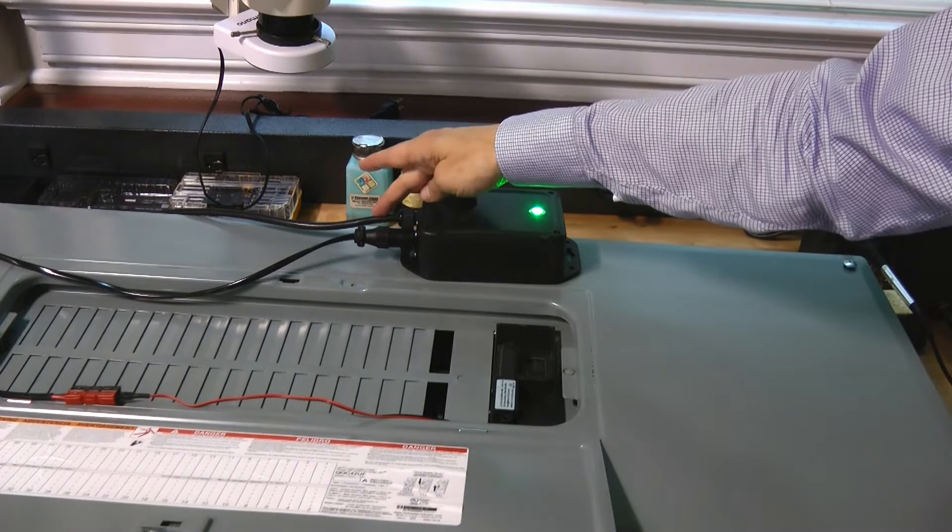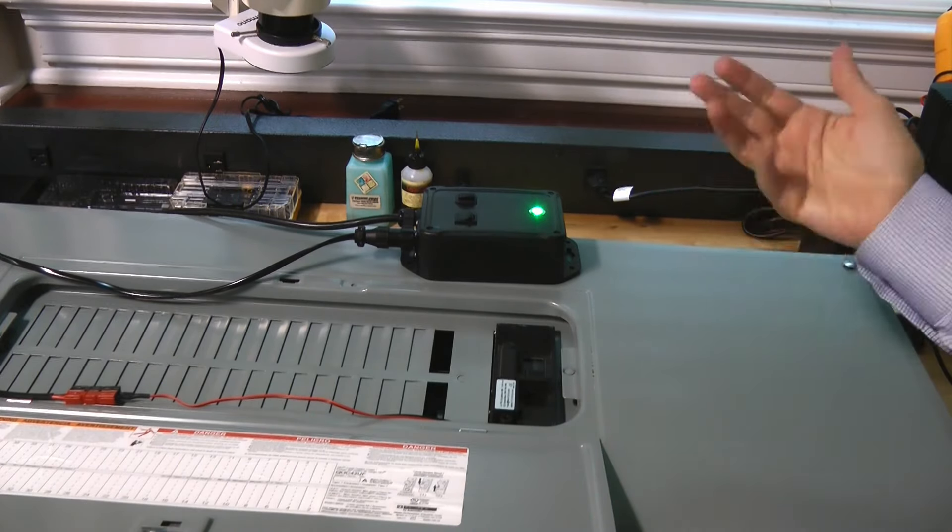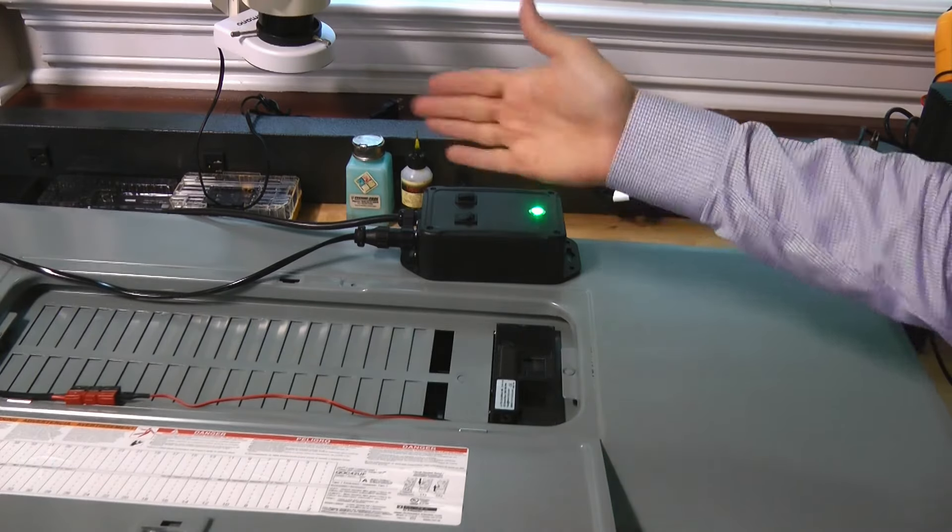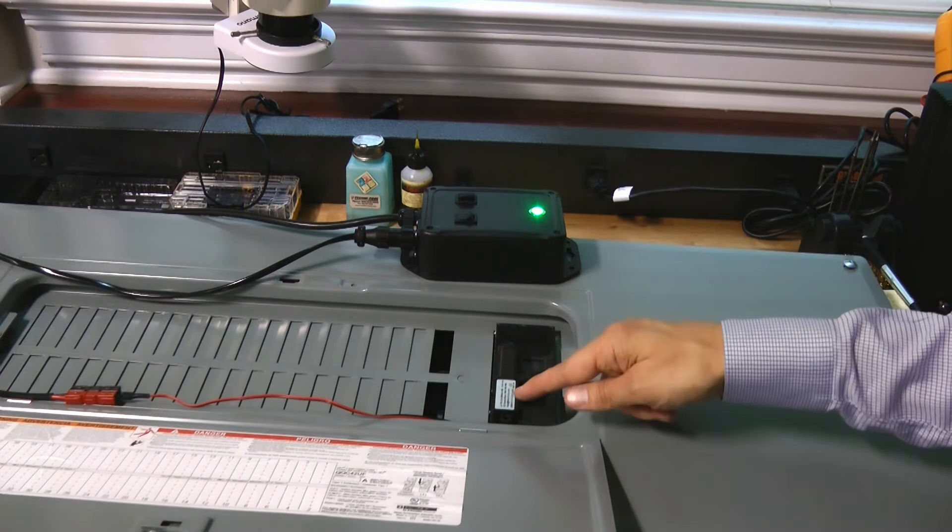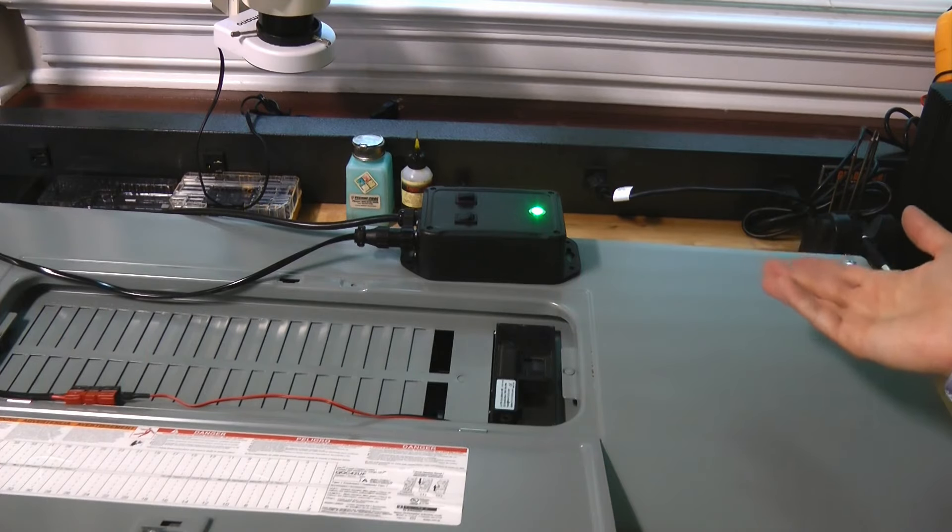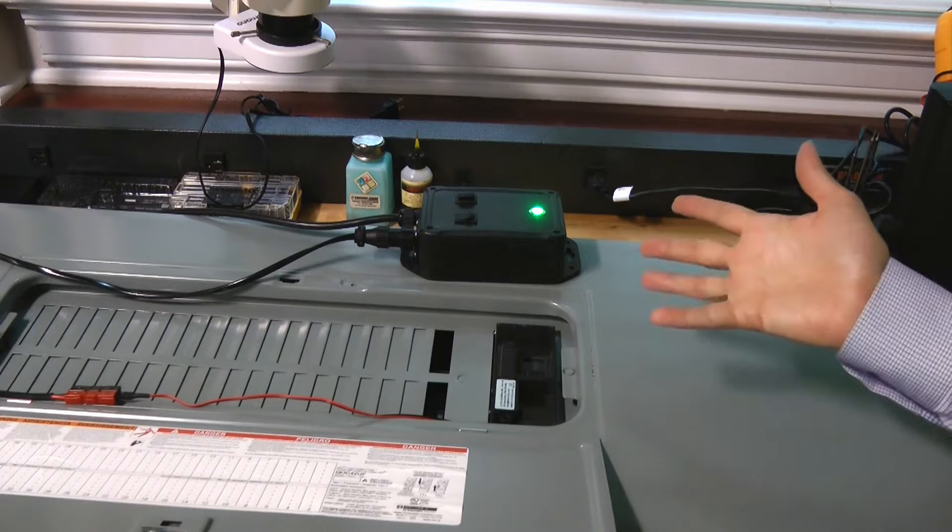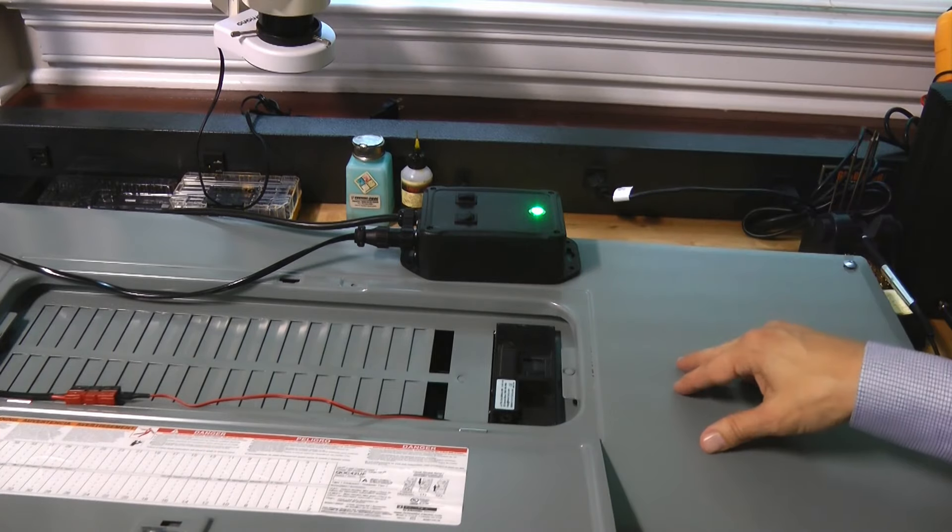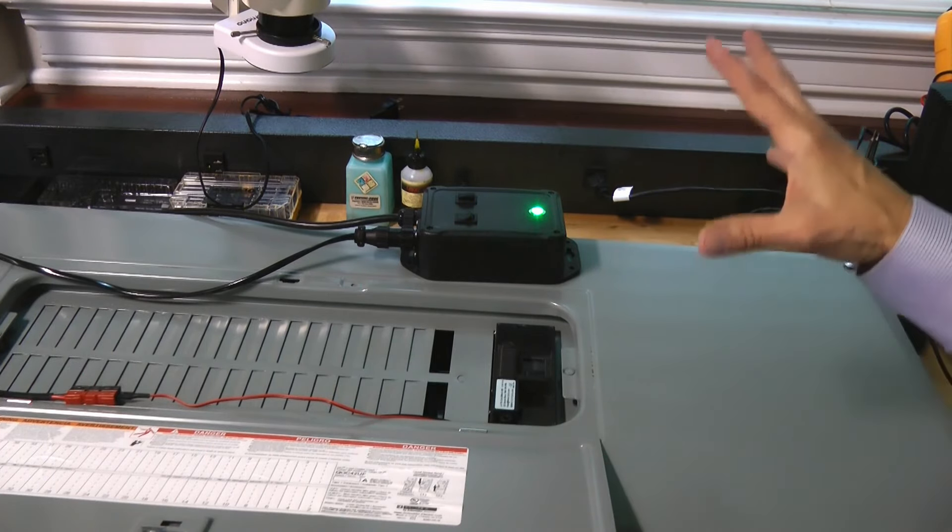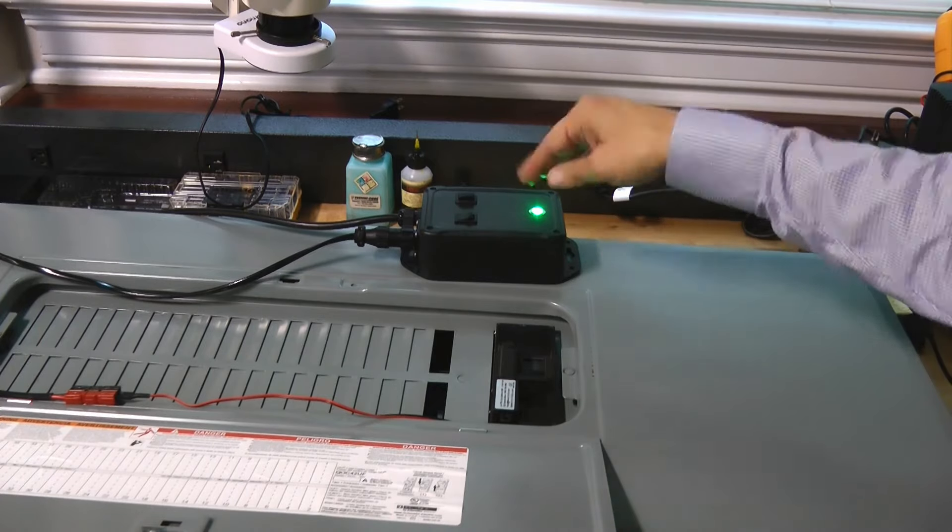So the way this would work is if you get an anomalous condition on the power feed, which could be an over voltage condition let's say from a CME, it would detect it and it would drive the linear actuator, which would then push this breaker and open it up, disconnecting you from the utility feed. Likewise if you get a big pulse like for E1 of an EMP, it would also detect it and do the same thing.